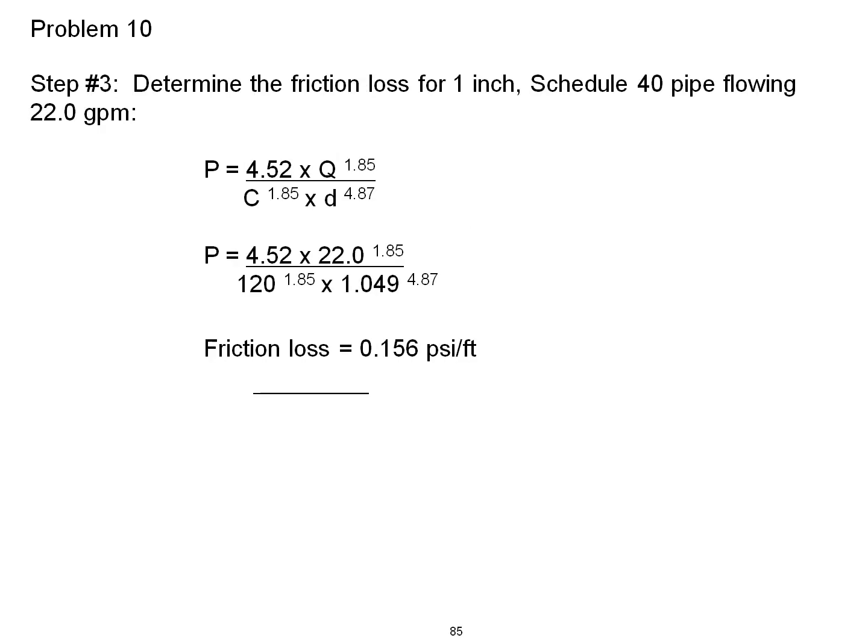Step 3, determine the friction loss through 1 inch Schedule 40 pipe flowing 22 gallons per minute. P is equal to the constant 4.52 times the flow to the 1.85 power, divided by the C factor to the 1.85 power, times the diameter to the 4.87 power. You should come up with a friction loss of 0.156 PSI per foot.